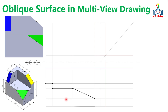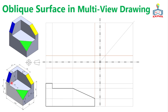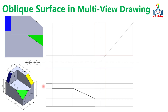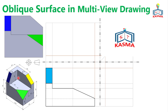The surface painted blue can be constructed as a rectangle. The multi-view projection of an inclined surface produces a distorted view and a line layout. You can refer to the video on projections of inclined surfaces to learn more about this.